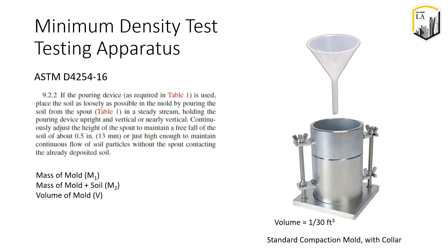For the minimum density test, you will need some soil, which is assumed to be oven dried, a funnel, a compaction mold without the collar, and a balance. The compaction mold is a standard mold with a volume of 1/30th of a cubic foot.